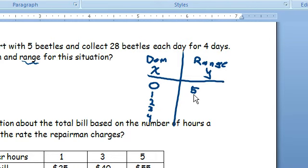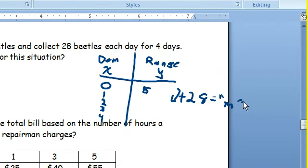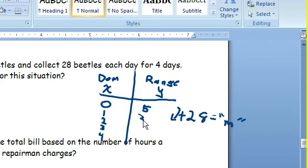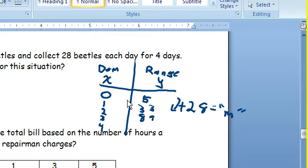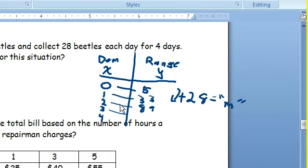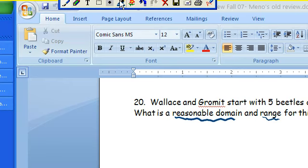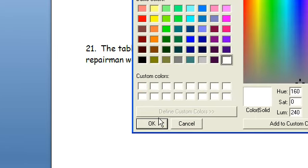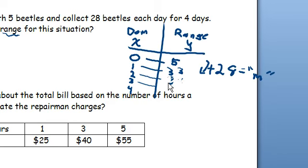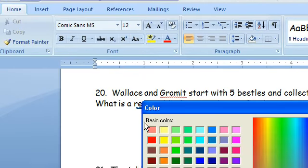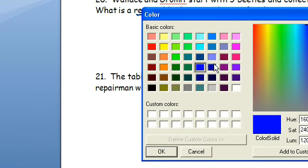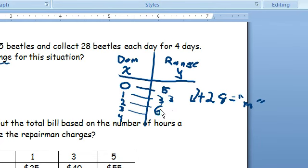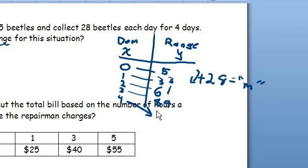So on day 0, they have 5 beetles. But they collect 28 beetles per day for 4 days. So day 1, day 2, day 3, day 4. If we add 28 each time, our rate of change is 28. That would be the same thing as our m, our rate of change. Then this table would be 33, 89. Wait, what's going on here? 1 would be 33, 2 would be... oh sorry, I skipped a step here. That should read 61. It would be 61, 89. And then on day 4, it would be 117.